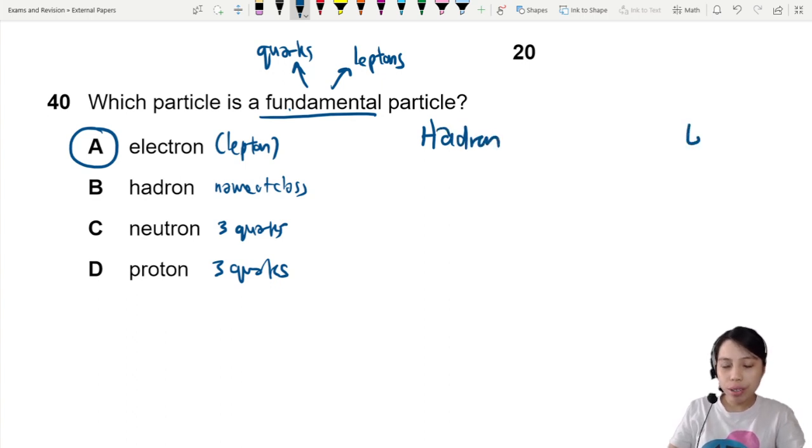We have hadrons and we have leptons. Leptons are things like electrons, the anti version of it, positron, positive electron, neutrinos and things like that. These are the very small, very slight particles.